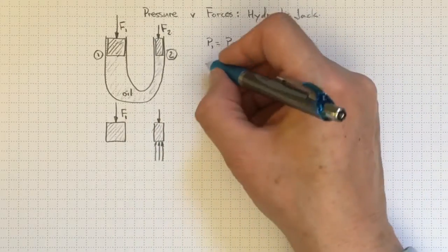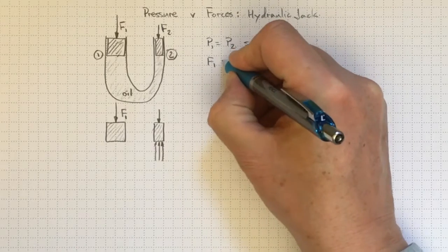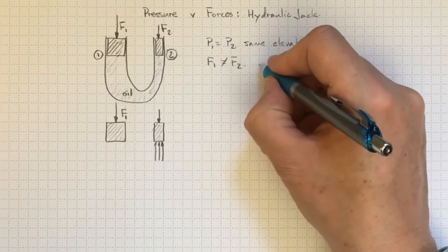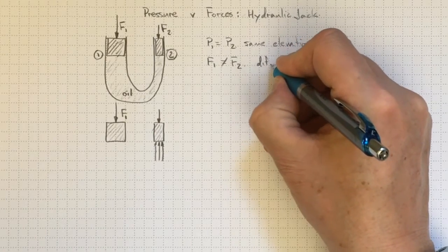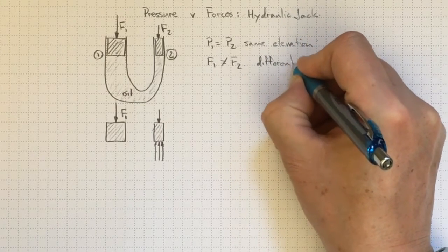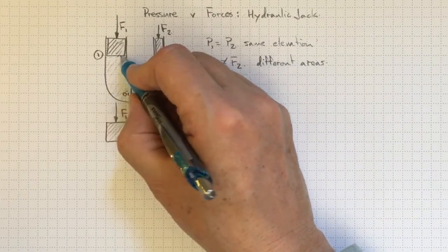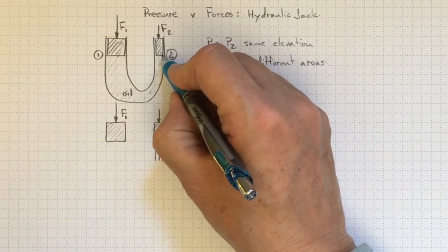But our observations tell us that F1 is not the same as F2. We've seen this in our application. And the reason for that is because we've got the same pressure, but it's acting over different areas. The area of this piston is larger than the area of that piston.